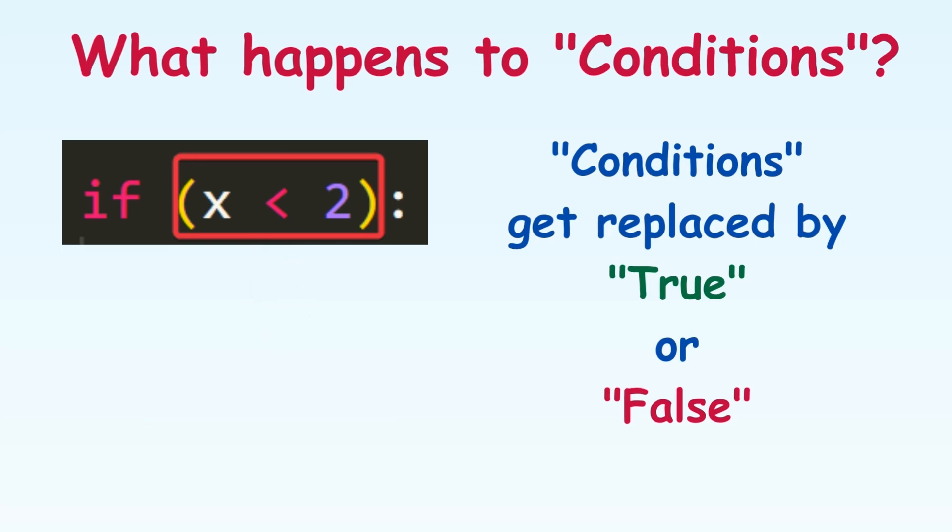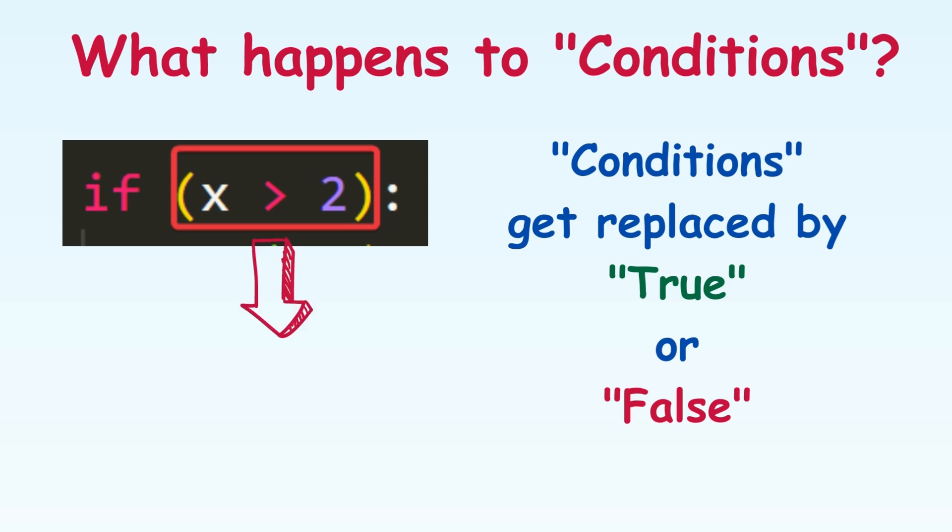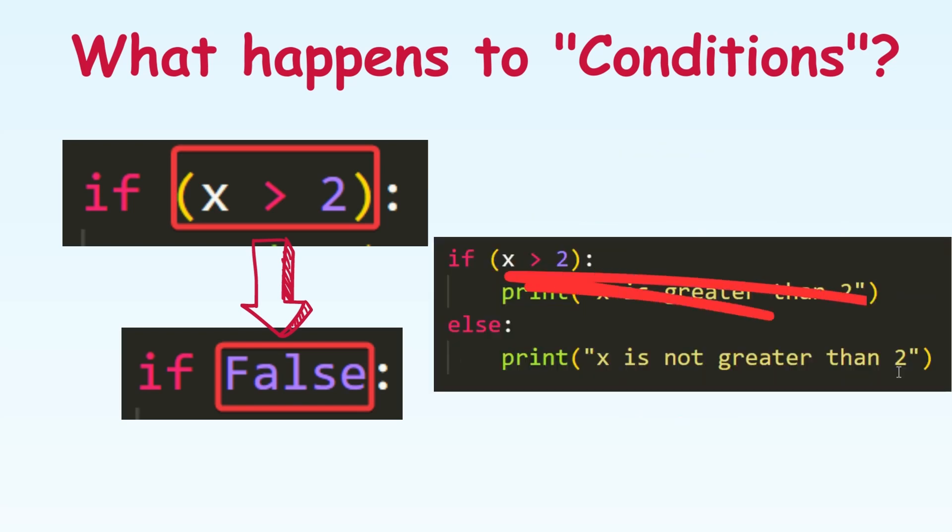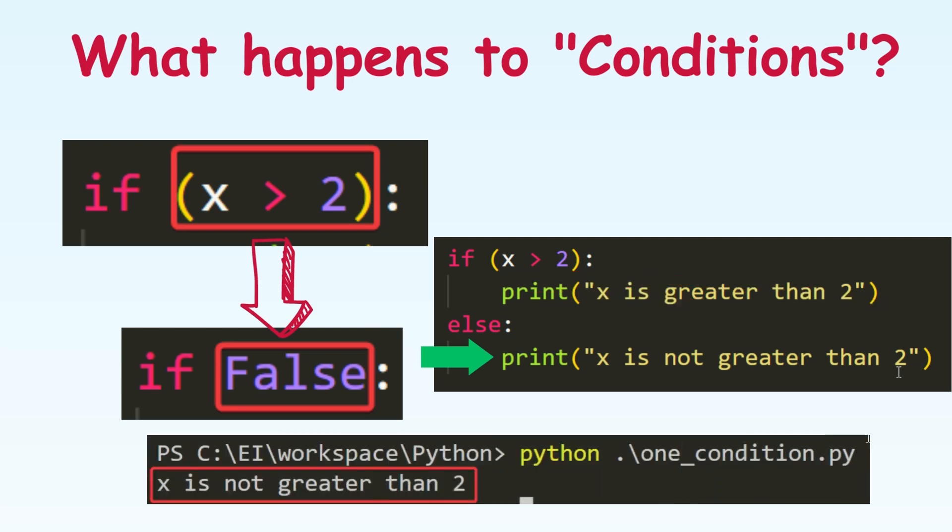If we were to change the condition from x less than 2 to x greater than 2, then this is what will happen. Python will first evaluate the condition, it will get false. So Python will skip whatever code is under if and it will straight away jump to else and print out whatever code is under else. As you can see, we got x is not greater than 2 as the output.